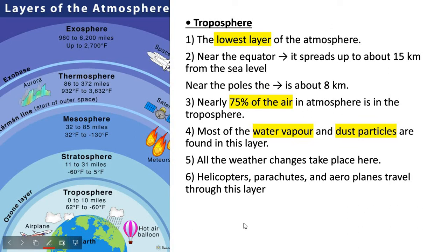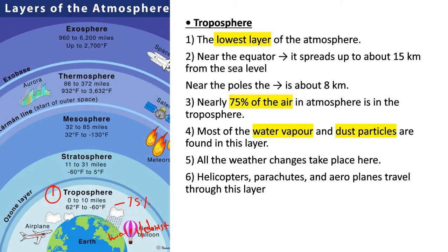The troposphere is the lowest layer we get in the atmosphere. Near the equator it spreads up to 15 kilometers from the sea level, and near the poles it is about 8 kilometers. 75 percent of air in the atmosphere is in the troposphere, and we can also find water vapor and dust particles in this layer. All types of weather changes take place here, and aeroplanes, hot air balloons, parachutes, and helicopters all fly through this layer.